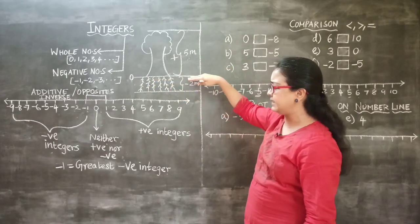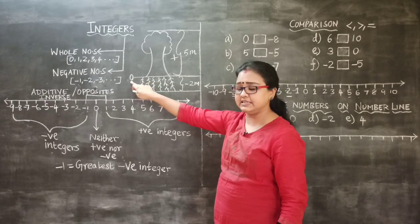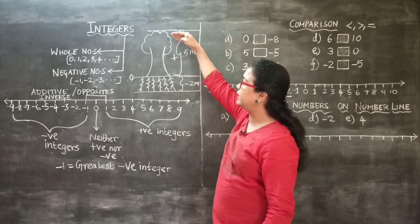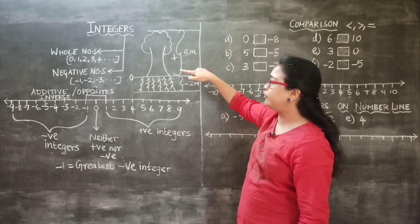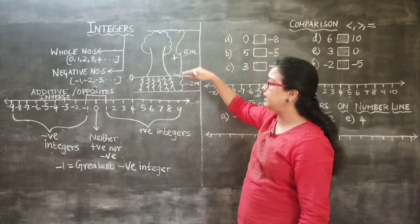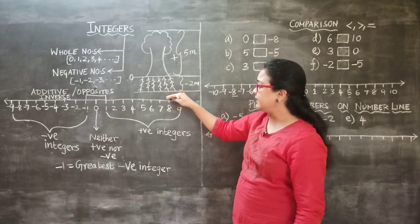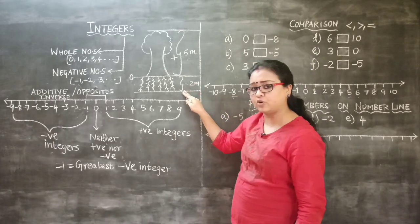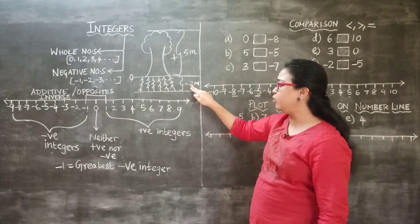Zero can be said as the center point — here 0 is the ground level. Above that, from the ground level to the tallest point of the tree, we specify in positive integers. For example, when the tallest point of the tree is 5 meters from the ground level, we are specifying it with a positive integer. Similarly, the roots that grow under the ground are specified as a negative integer — so minus 2 meters.